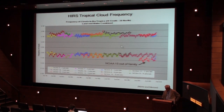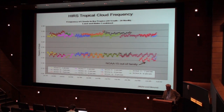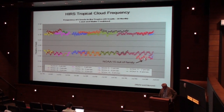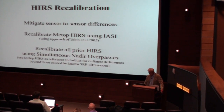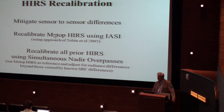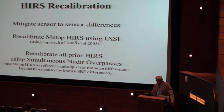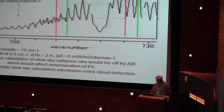We looked at HIRS-3 with the new sensor on NOAA-15. These are the trends for all clouds — pretty constant for the whole time, not too bad sensor to sensor. High clouds showed that trend. All of a sudden NOAA-15 was totally out of family. That stopped us for a while. Then we saw what Dave Tobin did with the MODIS and HIRS recalibration, and it was suggested maybe we could use IASI to recalibrate the most recent HIRS and bootstrap backwards to sort out all the sensor-to-sensor spectral differences.